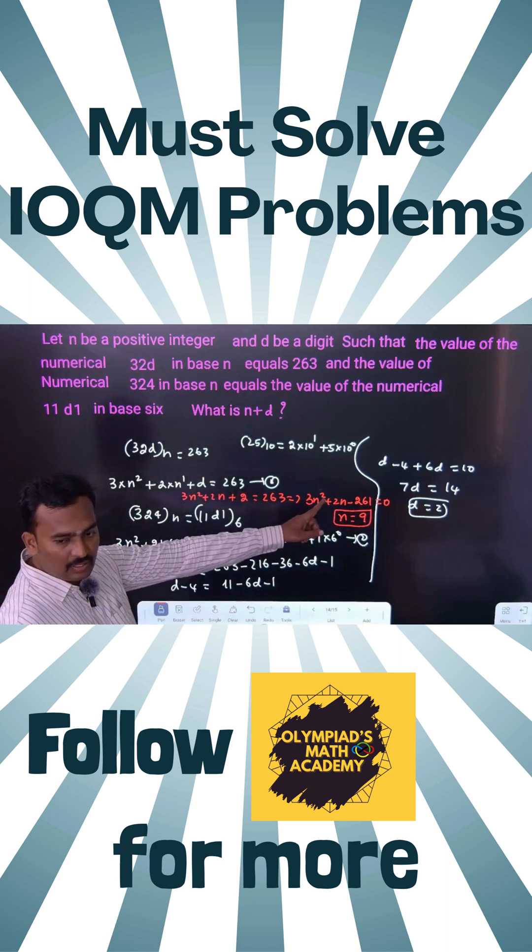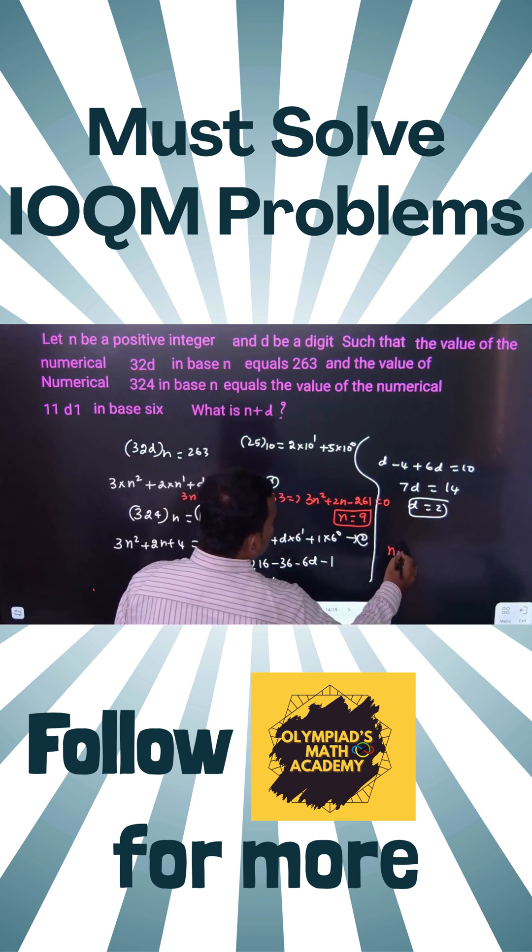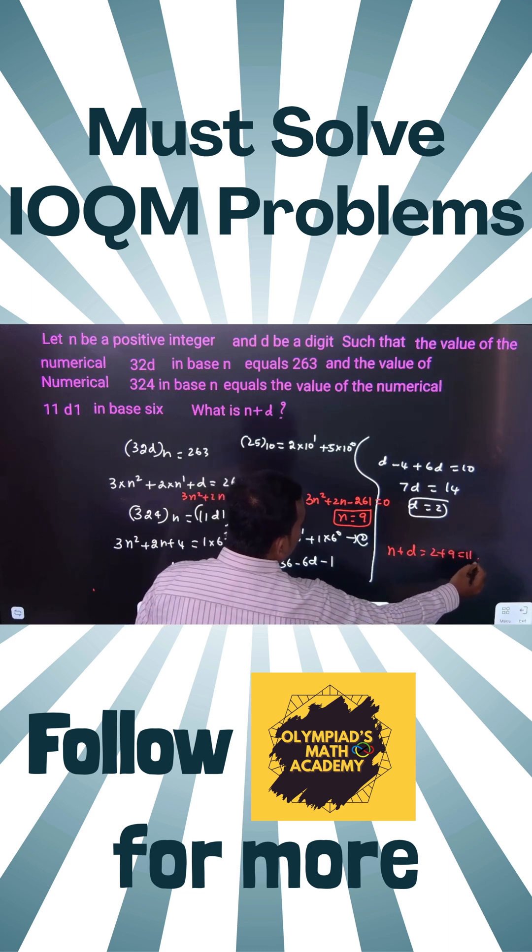You can verify this. The suitable n value, the only positive integer suitable here, is 9. Therefore, n plus d equals 2 plus 9, which is 11, your answer.